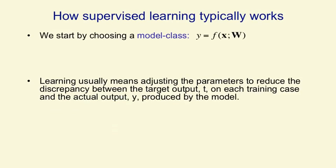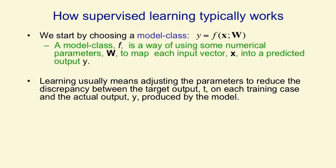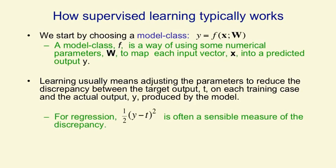Supervised learning works by initially selecting a model class — a whole set of models that we're prepared to consider as candidates. A model class is a function that takes an input vector and some parameters and gives you an output y. So a model class is simply a way of mapping an input to an output using some numerical parameters w, and then we adjust these parameters to make the mapping fit the supervised training data. What we mean by fit is minimising a discrepancy between the target output on each training case and the actual output produced by our system. An obvious measure of that discrepancy, using real values as outputs, is the squared difference between the output y and the correct output t — with a factor of one half so it cancels the two when we differentiate.